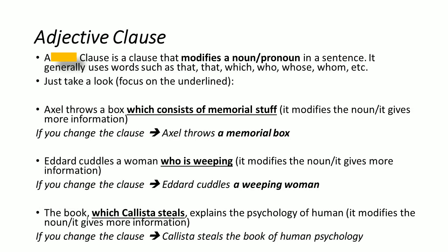Adjective clause is a clause that modifies a noun or pronoun in a sentence. Just as an adjective gives information about a noun, an adjective clause does the same. It commonly uses words like 'that,' 'which,' 'whose,' 'whom,' and so on.